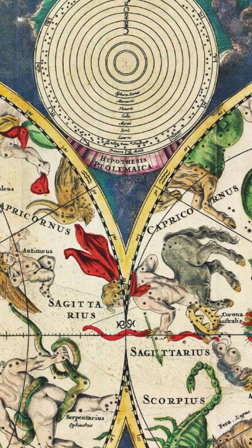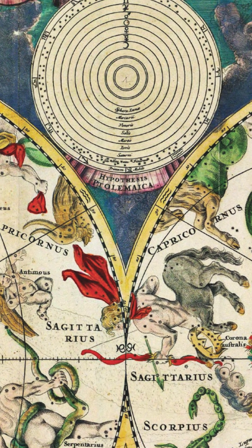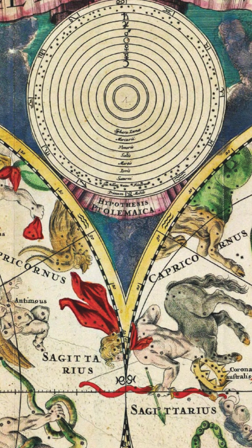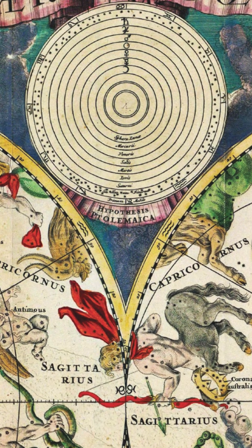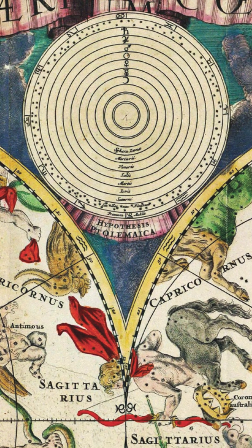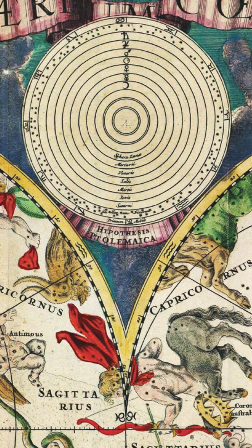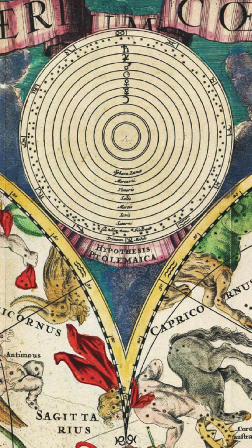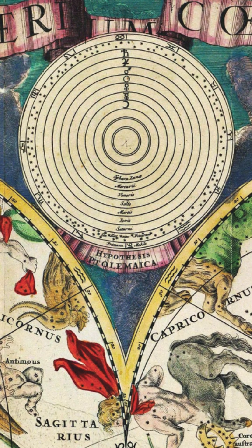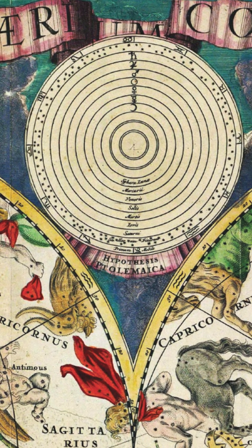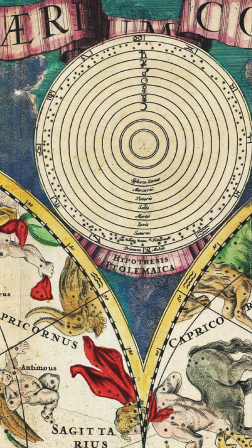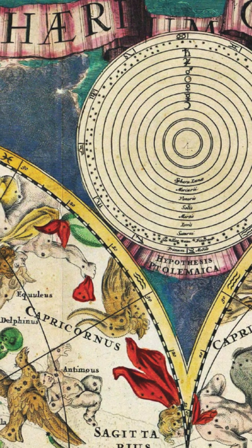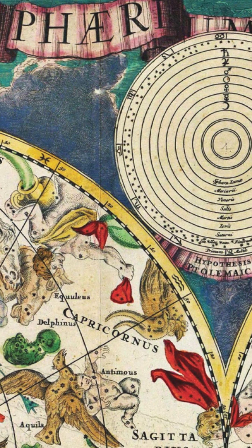Welcome to Art Lectures. Today we're examining an oversized and beautifully engraved double hemisphere celestial map created by the Dutch cartographer and artist Frederick De Witt around 1680. This rare and remarkable piece not only maps the stars, but also illustrates key astronomical theories of its time.